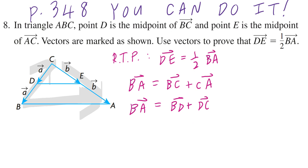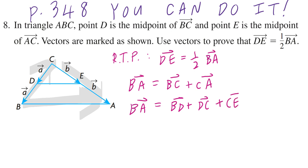If you think about this graphically, activating that dual mindset: BC is there, and BD plus DC lines up just like that. Likewise, if you think about CA, this is the same as vector CE plus vector EA. This makes sense because CA equals vector CE plus vector EA.